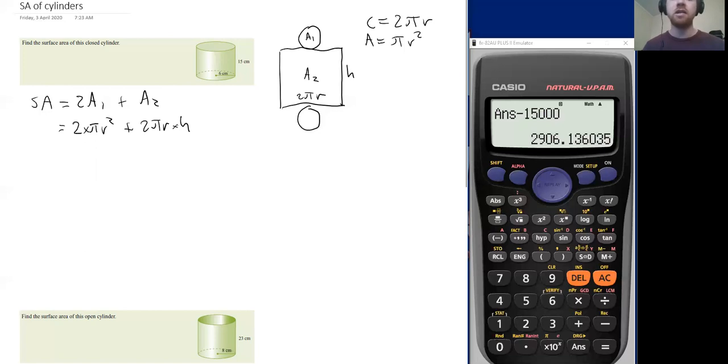So for any closed cylinder, this is what the surface area is going to be. And you just need to substitute the values given what you have in that particular context. So in this example here, our cylinder has a radius of 6 and a height of 15. So we can substitute our values.